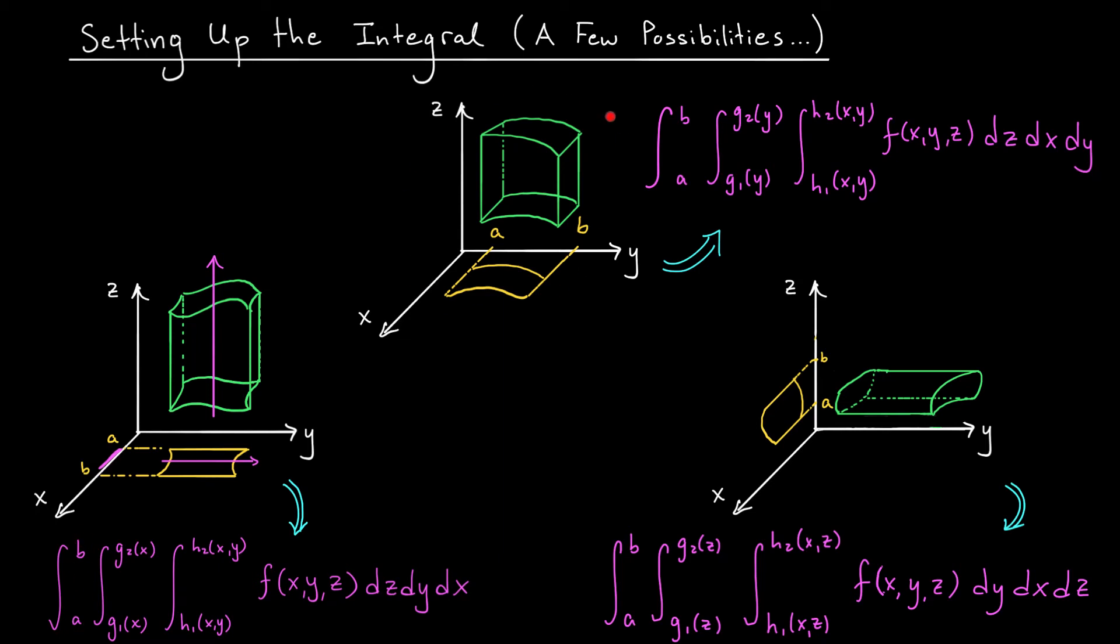Now take a look at the second example. Maybe once again, z is bounded between two functions of x and y. So we'll integrate z first. It goes from the lower function, h1, to the upper function, h2. To decide the order for the remaining variables, well, we once again look at our projection on the xy plane. Here, you can see that we're dealing with a type 2 region, right?